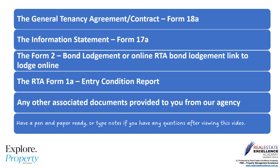You should have the following documents in front of you: the Form 18A General Tenancy Agreement contract, the RTA Form 17A information statement. Bond information will be provided to you from our agency, along with RTA lodgement links to lodge your bond online direct to the RTA, or the Form 2 bond lodgement. The RTA Form 1A entry condition report will be provided to you on or before the day you take possession of the property — usually the day you pick up the keys. Any other associated documents from our agency will be included as well.